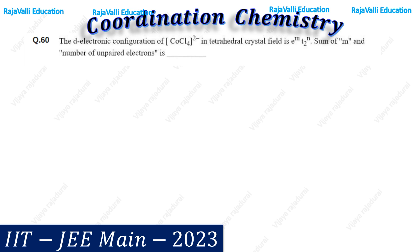The question is: the d-electronic configuration of CoCl₄²⁻ in tetrahedral crystal field is E^M, T2^N. Find the sum of M and the number of unpaired electrons.